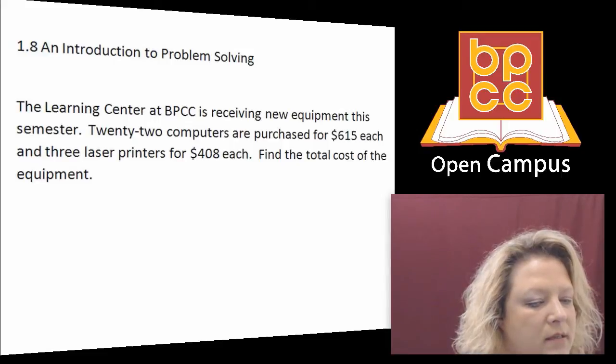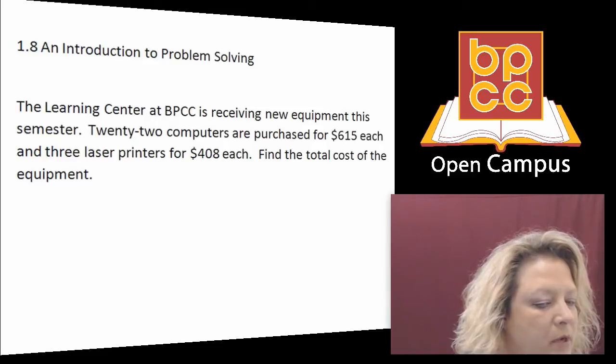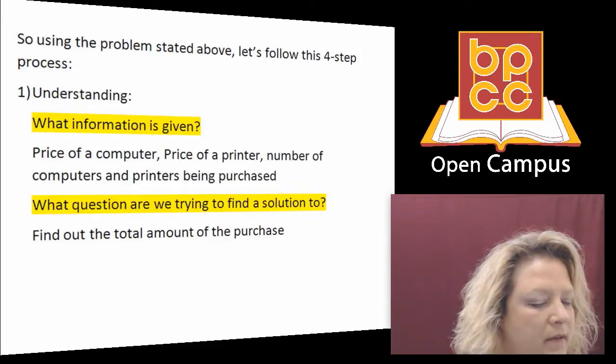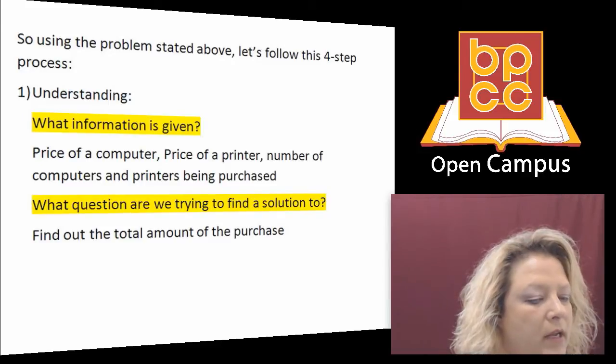So if you look at this, it says we're going to get some new equipment, computers, and printers. And it wants you to find the total cost, meaning I want the total from the computers and the printers all added together. So there are a couple of steps that you do. You have to understand what information is given first. They give you the price of the computer, they give you the price of the printer, and they also tell you how many of each we are getting.